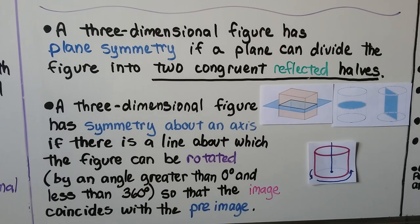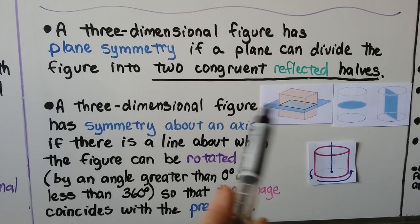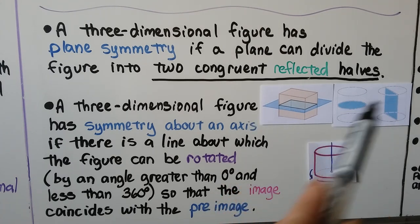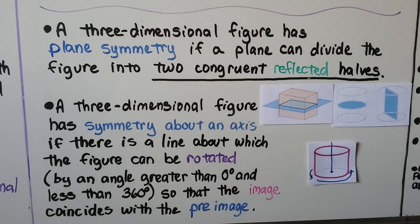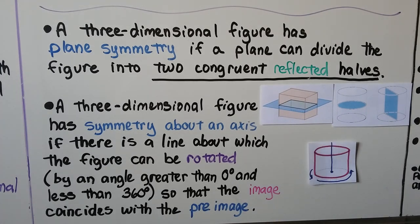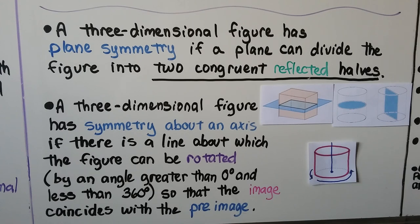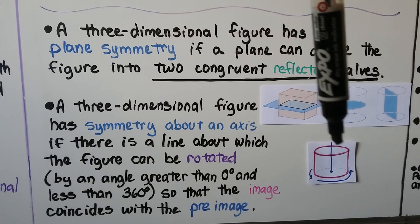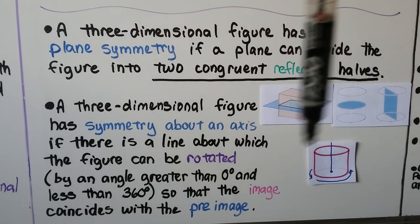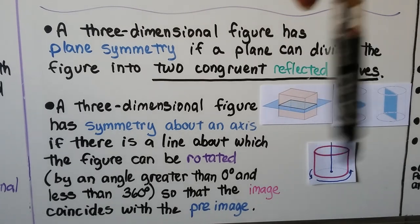A three-dimensional figure has plane symmetry if a plane can divide the figure into two congruent reflective halves. A three-dimensional figure has symmetry about an axis if there's a line about which the figure can be rotated by an angle greater than zero degrees and less than 360 degrees so that the image coincides with the pre-image. So if we had a cylinder and put a string here, it could rotate around and it would be symmetrical.